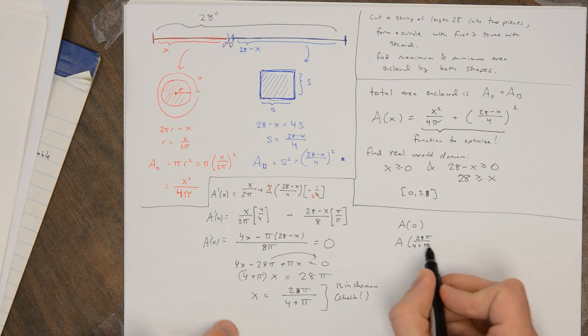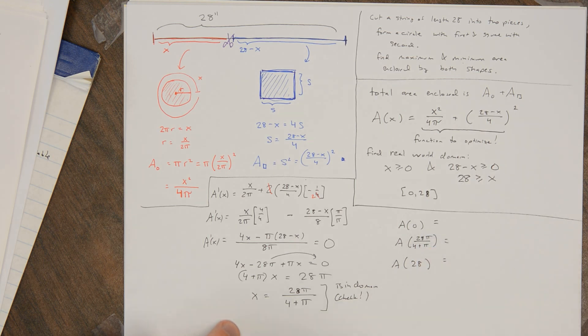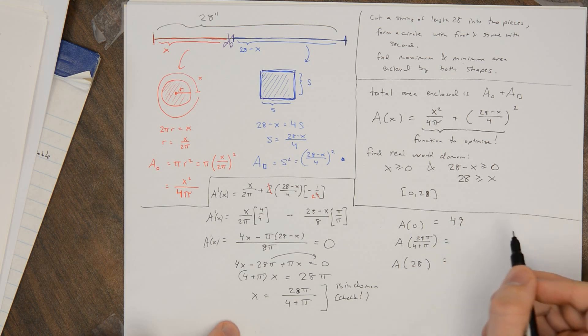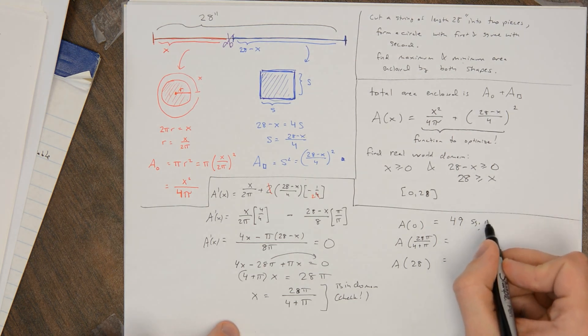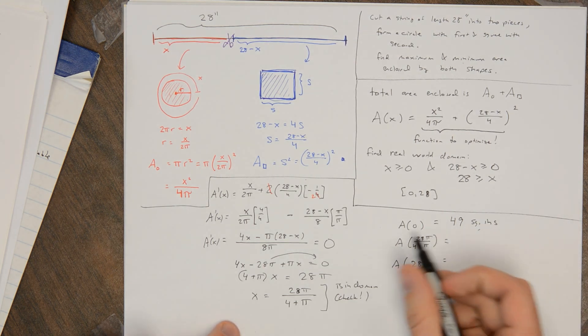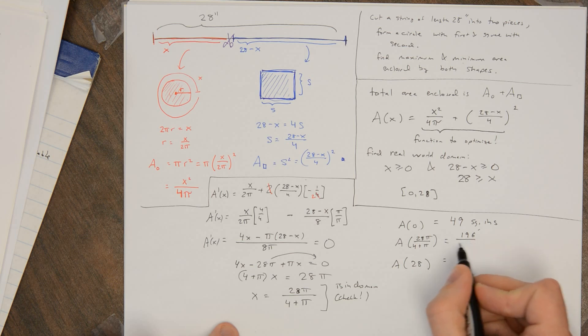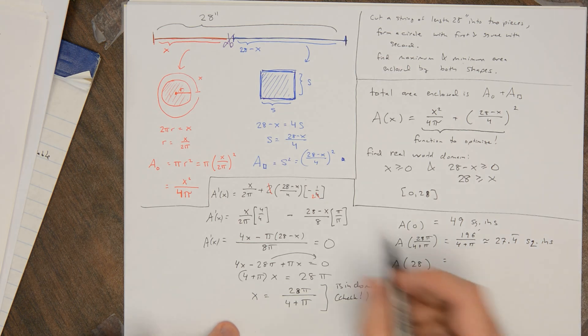And this is, you know, possible to do by hand, but just sort of time consuming. So I'll just go ahead and tell you what these are. If you do this midpoint, you get the smallest answer, it ends up being 196/(4 + π), which is around 27.4 repeating square inches.